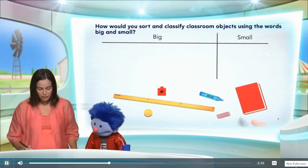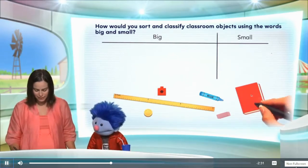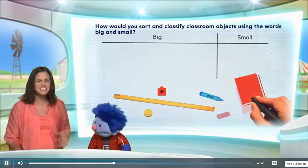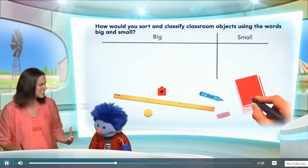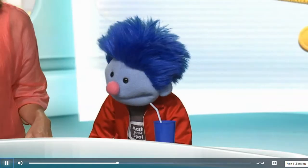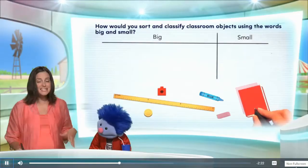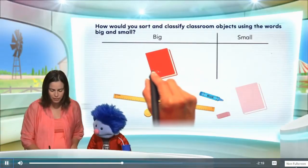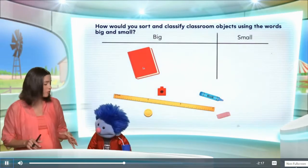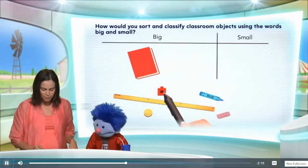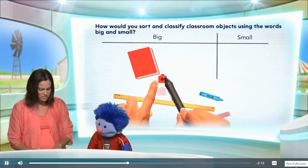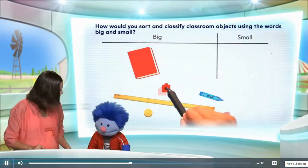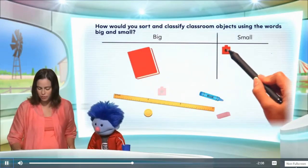Now look at this. We have a book. If we look at the other objects, Joey, does our book look small or does it look big? Well, it looks kind of big. It does look big, yeah. So I'm going to place my book in my big category. What about the connecting cube? Does it look small or do you think it looks big? I think it looks small. I agree with you.